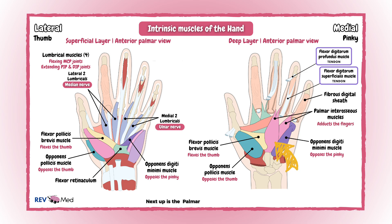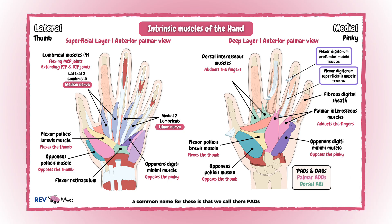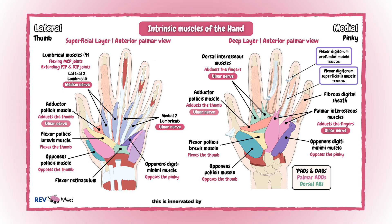Next up are the palmar interossei muscles, which adduct the fingers towards the midline — they are palmar adductors. The dorsal interossei muscles abduct the fingers away from the midline — these are your dorsal abductors. A common mnemonic is PADs and DABs: Palmar ADds, Dorsal ABducts. Both muscle groups are innervated by the ulnar nerve. Finally, in the deep muscles, is the adductor pollicis muscle. As the name suggests, it adducts the thumb, and it is also innervated by the ulnar nerve.